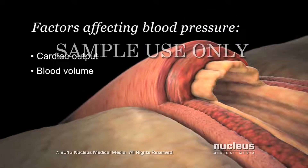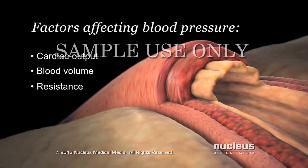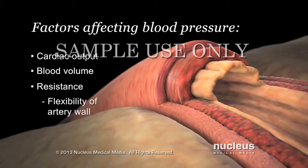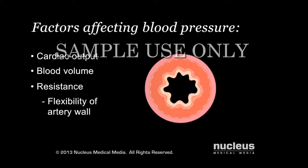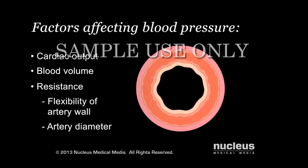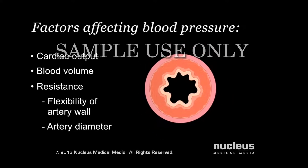The third factor that affects your blood pressure is resistance, which is anything working against the blood flow through your arteries. Several factors contribute to resistance. One resistance factor is the flexibility of your artery wall. Healthy arteries expand with each heartbeat to help reduce blood pressure on the wall. Another resistance factor is the diameter of your arteries. Your body is able to increase the diameter of your arteries to lower your blood pressure, or reduce the diameter to raise your blood pressure.